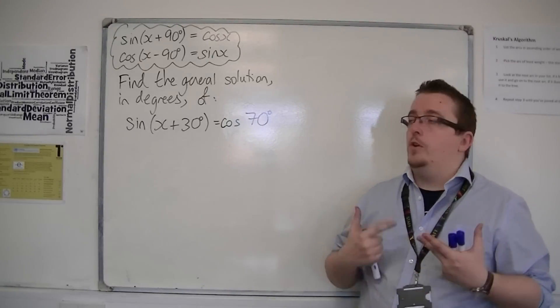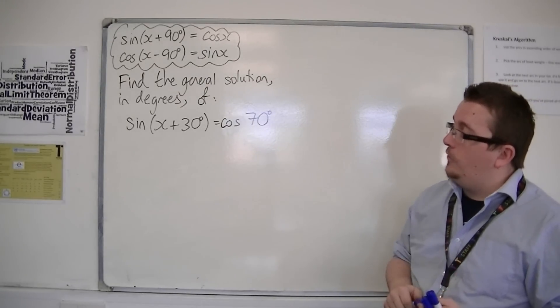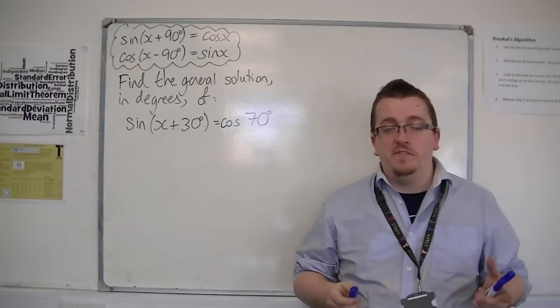So we could have a question that asks us to find the general solution in degrees of sine of x plus 30 is equal to cos of 70, for example.